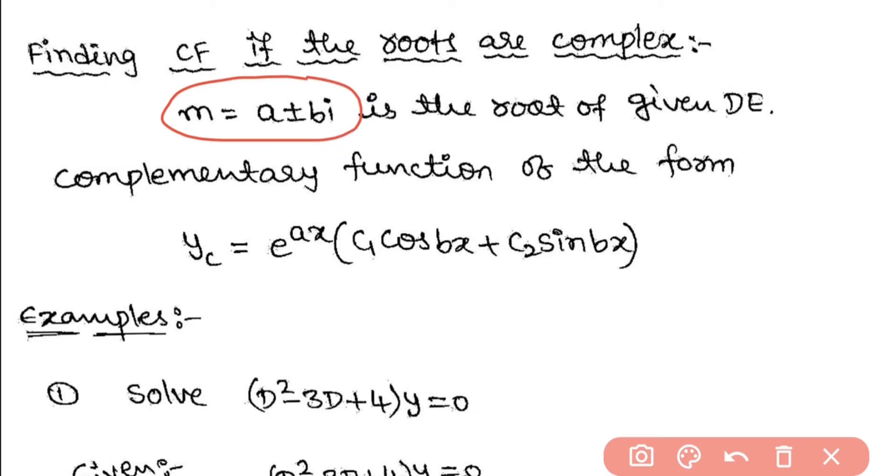If the roots are in the form of A plus or minus IB, then the CF will be: yc = e^(Ax) × (C1·cos(Bx) + C2·sin(Bx)).